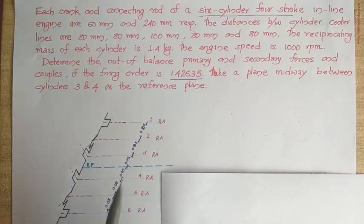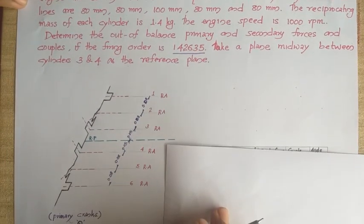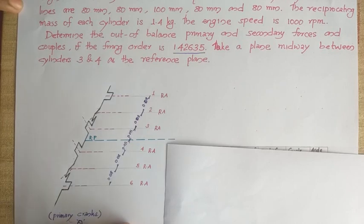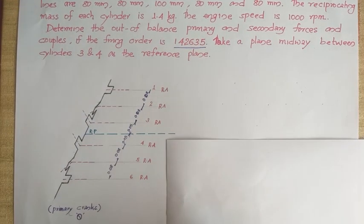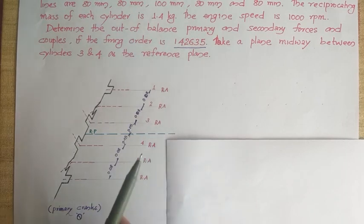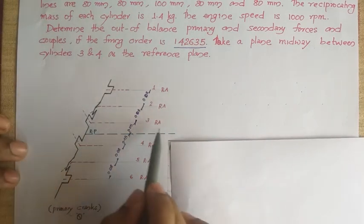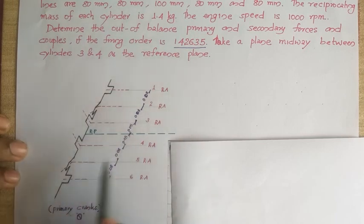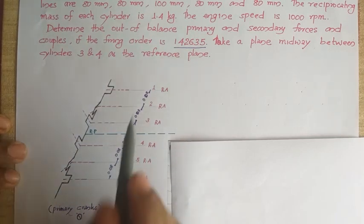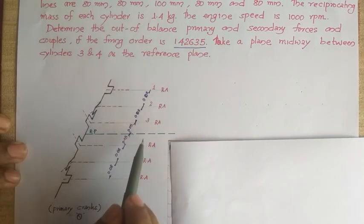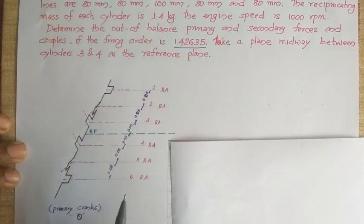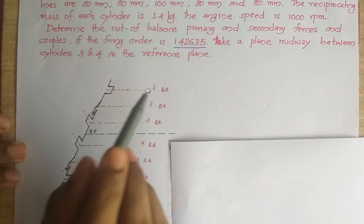First we will be drawing the primary crank diagram, which is used for constructing the primary force as well as primary couple polygons. There will be 6 centre lines corresponding to each cylinder, and those planes are named 1, 2, 3, 4, 5, and 6. Next, we have to mark the position of each crank.